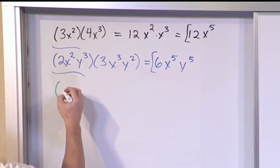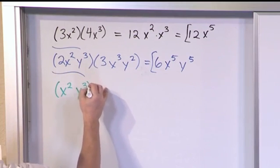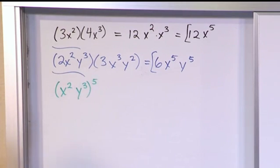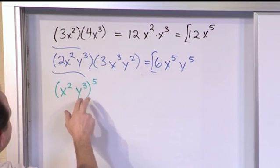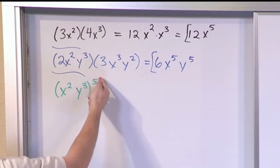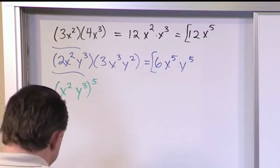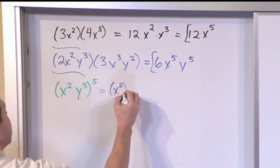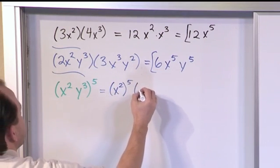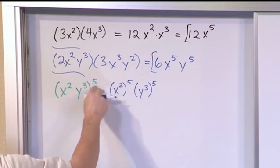Now what if we had x squared times y cubed all raised to the fifth power? And we've done problems like this before. We have two things going on here. First, we have two items in here in the parentheses and we have the exponent there. So the exponent is going to be applied to each of the terms inside. So we have x squared raised to the fifth power times y cubed, also raised to the fifth power, because it applies to each guy.